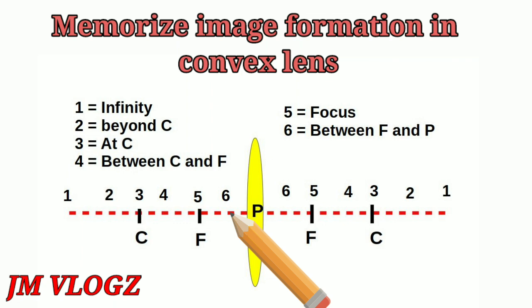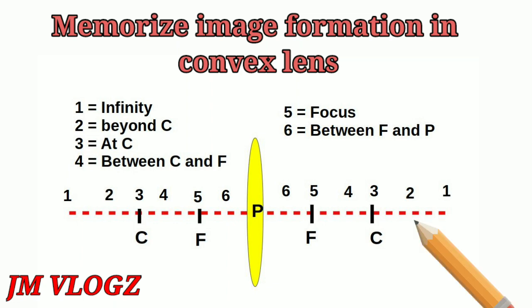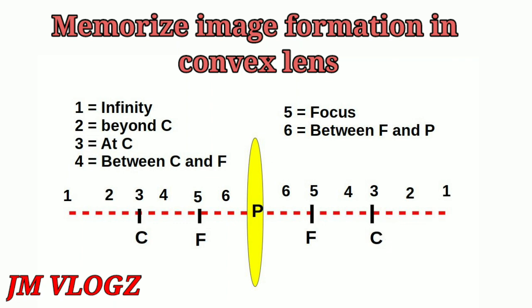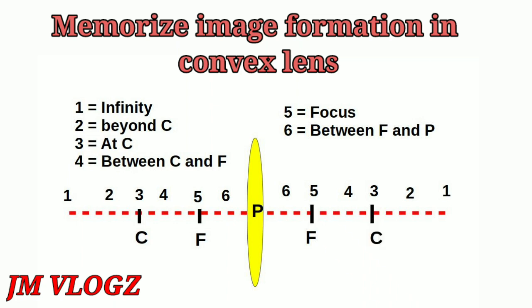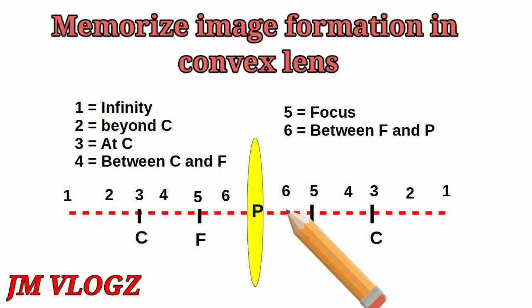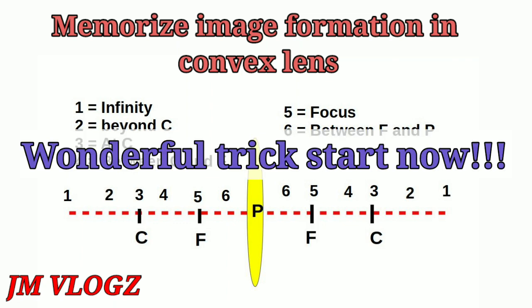On the other side you can mark the same way: at infinity we take 1, beyond C we take 2, on center of curvature we take 3, between center of curvature and focus we take 4, at focus we choose 5, and between focus and pole we choose 6. Our wonderful trick starts now — we remember an equation.